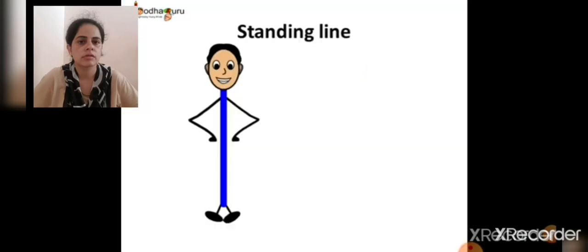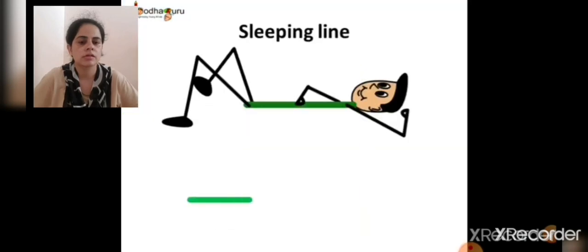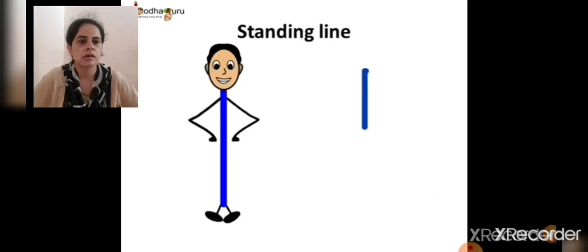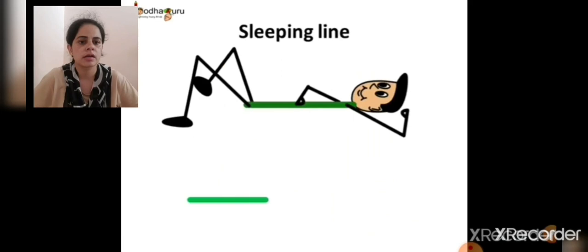Let us call it a sleeping line. So now we can draw the rain and the lake too. The rain is a standing line and the water is a sleeping line. Let us all say and draw together — standing line, sleeping line. After a nice walk, Bola went back to his home.